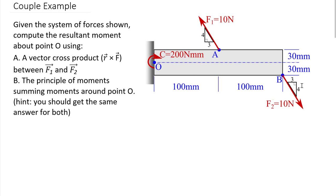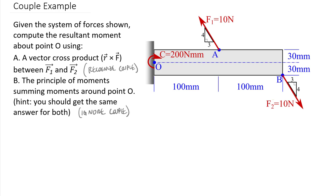Because both forces are proportional to a 3-4-5 triangle, F1 and F2 turn out to be parallel forces — they're equal at 10 newtons each and opposite in direction. So F1 and F2 actually form a force couple that we can resolve into a couple value. The difference between approach A and approach B is that approach A will recognize the couple, while approach B will simply ignore the couple and sum moments directly. We'll get the same answer both ways. In part A, one of the first decisions is whether to draw an r vector pointing at F1 or F2.